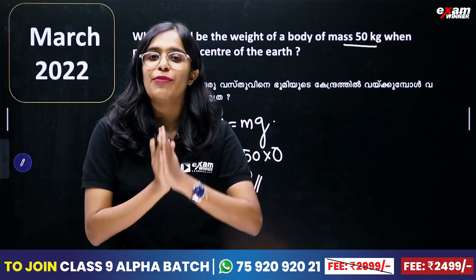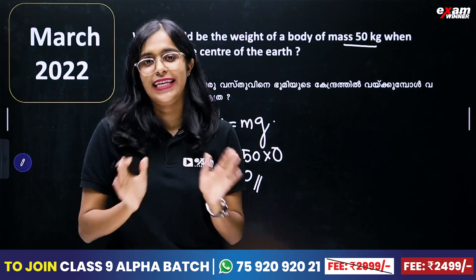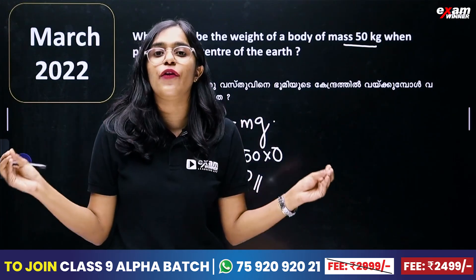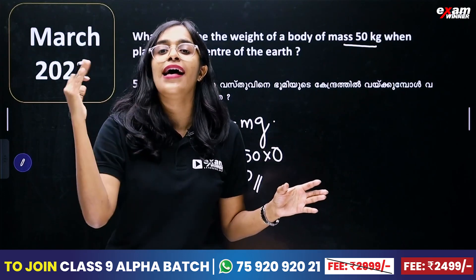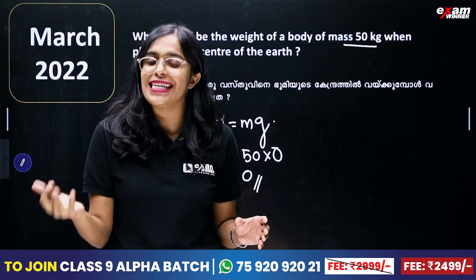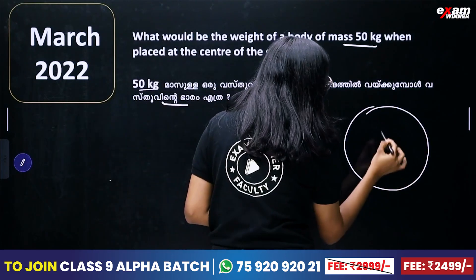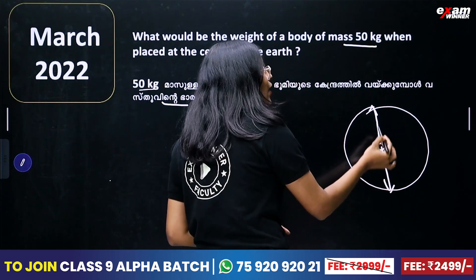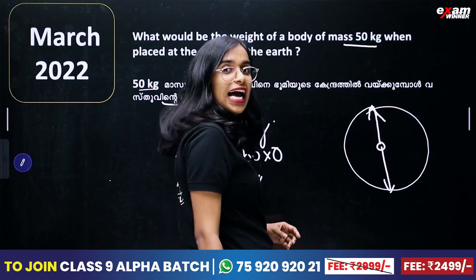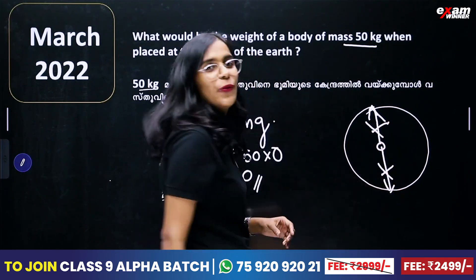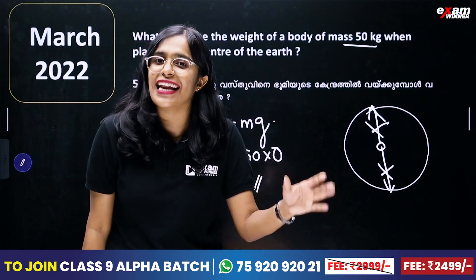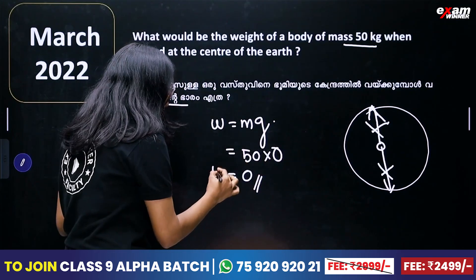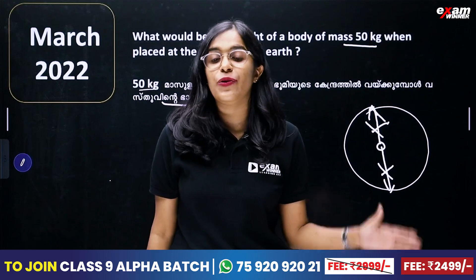Because at the center of Earth, our gravitational force is zero. The net force of attraction in the center of Earth will cancel. Equal forces act in the opposite direction, so the force of attraction will cancel. If there is no gravitational force of attraction, there will be no acceleration due to gravity — that is, G equals zero. Therefore, the weight W is equal to zero.